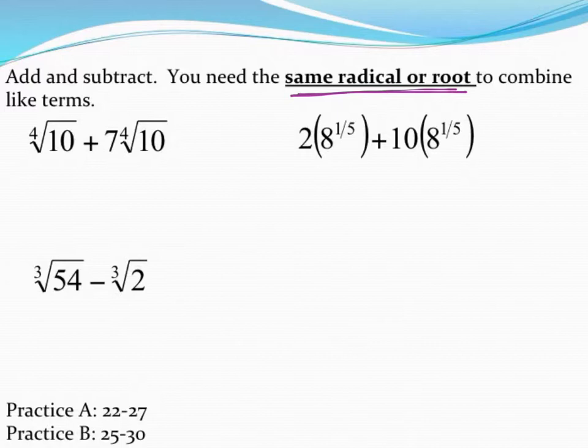For example, in this first one, I'm going to throw a 1 in front of this. I can always add a 1 coefficient. Notice that I've got 1 times the 4th root of 10, whatever that's equal to, and then 7 times the 4th root of 10. We can consider them like terms because they have the same exact radical on each one, the 4th root of 10. If I've got 1 of them in this hand and 7 of them in this hand, then altogether I have 8 and then 4th root of 10.